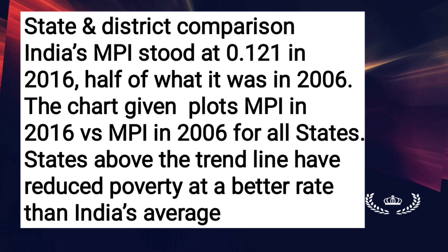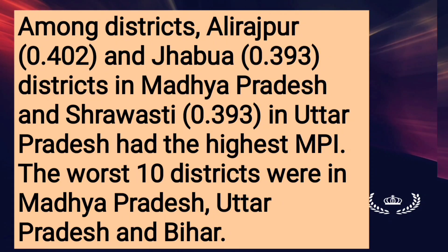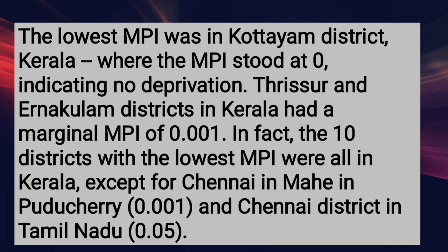States above the trendline have reduced poverty at a better rate than India's average. Among districts, Ali-Tajpur (0.402) and Jhabua (0.393) in Madhya Pradesh and Shravasti (0.393) in Uttar Pradesh had the highest MPI. The worst 10 districts were in Madhya Pradesh, Uttar Pradesh and Bihar. The lowest MPI was in Kottayam District, Kerala, where MPI stood at 0, indicating no deprivation. Thrissur and Ernakulam districts in Kerala had a marginal MPI of 0.001. In fact, the 10 districts with the lowest MPI were all in Kerala, except for Mahe in Puducherry (0.001) and Chennai district in Tamil Nadu (0.05).